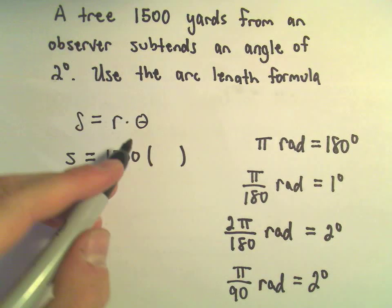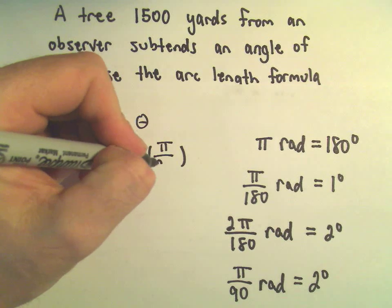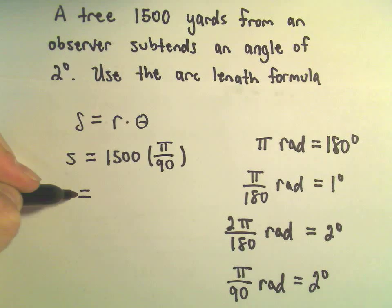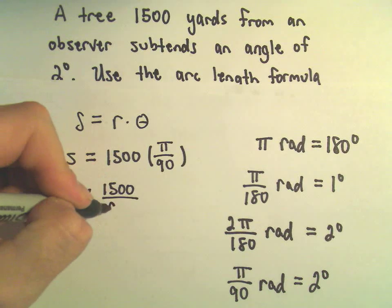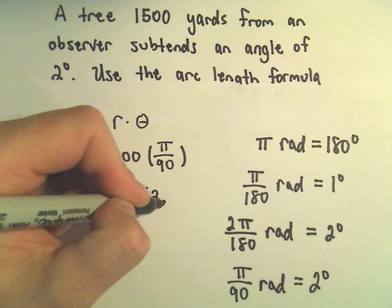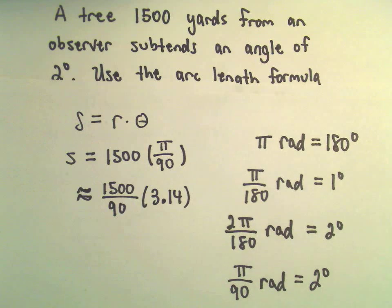So for our angle theta, we'll plug in π/90. And now I'm just going to do the arithmetic. We'll do 1500 over 90, and I'm going to approximate pi by using 3.14.